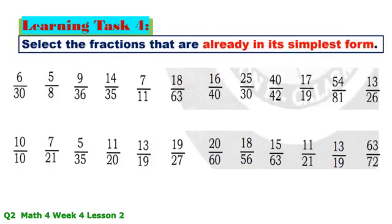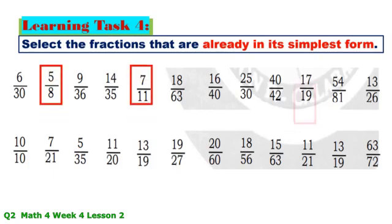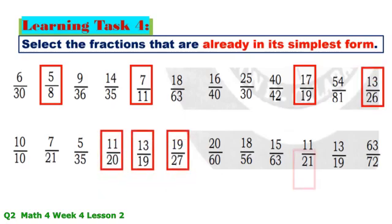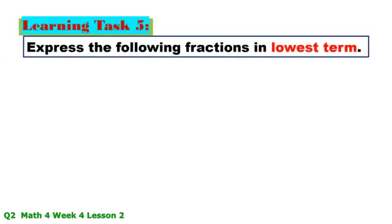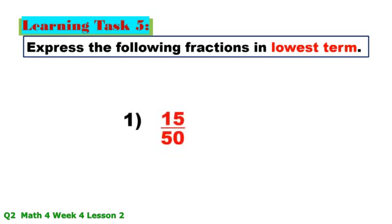Learning Task 4: Select the fractions that are already in their simplest form. Learning Task 5: Express the following fractions in lowest term. Number 1: 15/50 — GCF is 5; 15 ÷ 5 = 3, 50 ÷ 5 = 10, answer is 3/10.